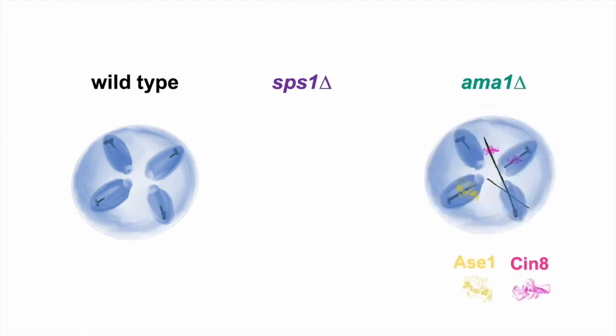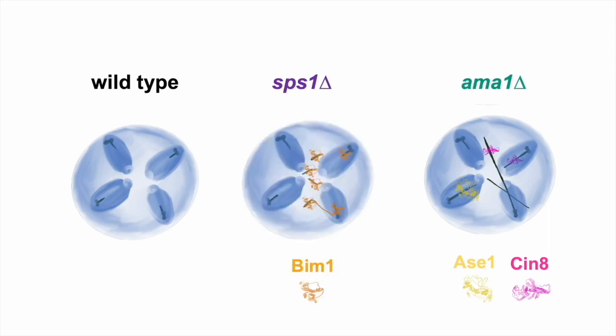Without AMA1, CIN8 and ACE1 are not removed from the spindles, while without SPS1, BIM1 is not removed.